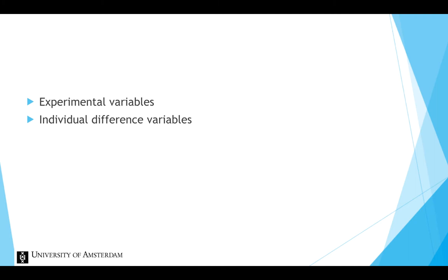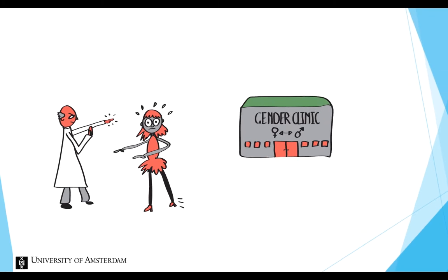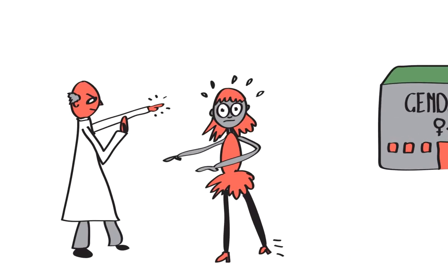These variables are an intrinsic property of the participant and not under the researcher's control. Think of variables as age or gender, for example. We cannot send participants to a gender clinic and ask them to undergo a gender change so that we can investigate the effect of gender.